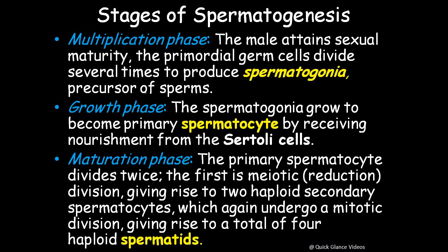There are three stages. First is the multiplication phase: when the male attains sexual maturity, primordial germ cells divide several times to produce spermatogonia, which are the precursors of sperms. Second is the growth phase: the spermatogonia produced in the multiplication phase grow to become primary spermatocytes by receiving nourishment from Sertoli cells.